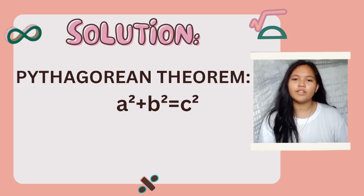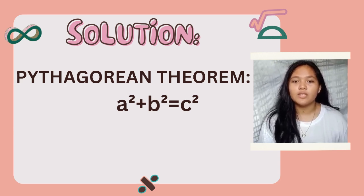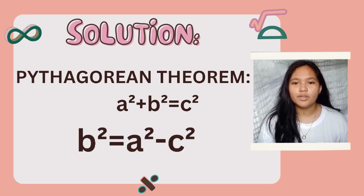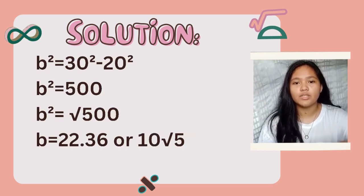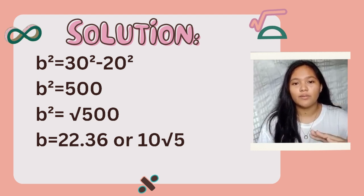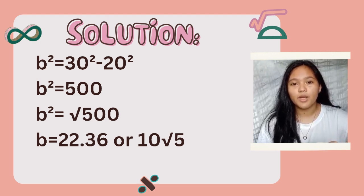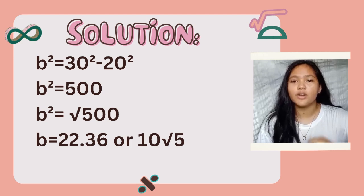Using the Pythagorean theorem, A squared plus B squared is equal to C squared. Since B is unknown, B squared equals A squared minus C squared. Substituting the values, B squared equals 30 squared minus 20 squared, which gives us 500. So B squared is equal to 500, and the square root of 500 is 22.36. Therefore B is equal to 22.36 feet.